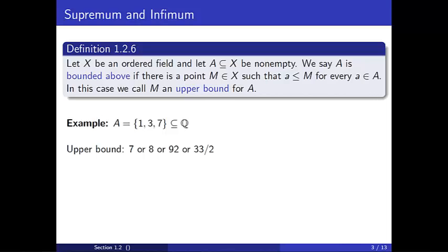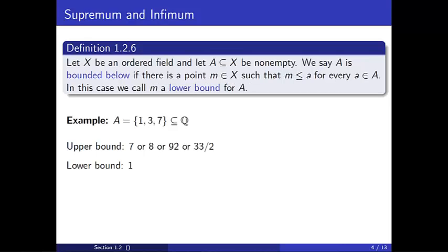What do you think we could pick for a lower bound of A? 1 is an obvious choice since it is a rational number less than or equal to every element of A. We could also pick negative 3 or 1 half or negative 10. In fact, any rational number less than or equal to 1 will satisfy our definition of a lower bound for A.